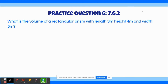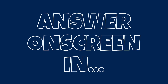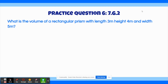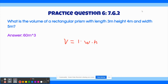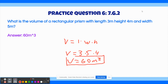The sixth practice question asks: What is the volume of a rectangular prism with length 3 meters, height 4 meters, and width 5 meters? The answer is 60 meters cubed. Using the formula — volume equals length times width times height — we plug in: volume equals 3 times 5 times 4, which gives us 60. The unit is meters cubed since we're finding volume. Final answer: 60 meters cubed.